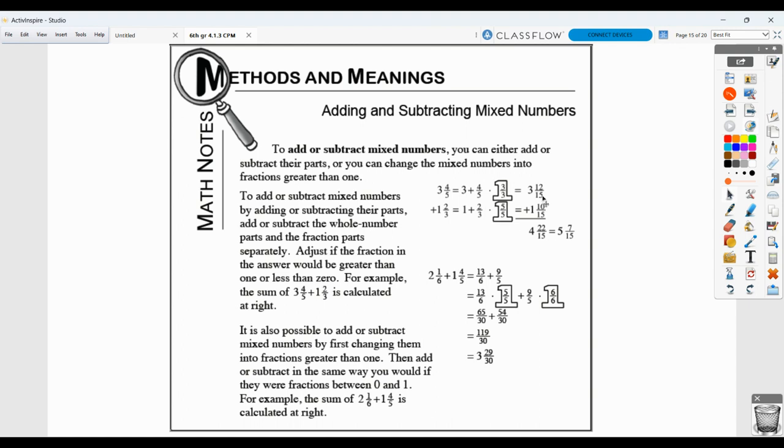For the fraction, then we get 12 fifteenths and 10 fifteenths, and then we can't forget about our whole number component 3 and 1. We then add the fractional part, we add the whole number part, we get 4 and 22 fifteenths, but 22 fifteenths is a fraction greater than 1, so we would change that to a mixed number.